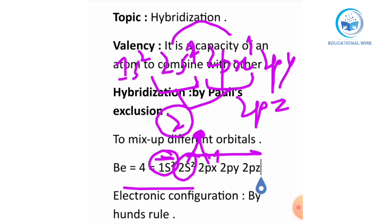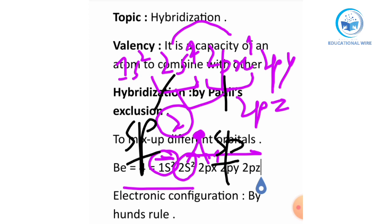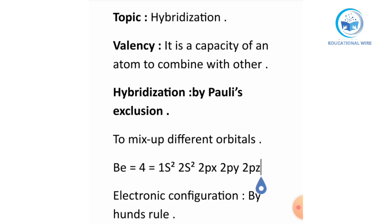So it says that 2s is one electron and 2px is one electron — both are unpaired. Therefore there are two valence electrons in beryllium. The names given are: 2s1 is called sp and 2px1 is also called sp. These two combine as sp hybridization. Their energies and shapes mix up, but the electrons themselves do not mix. According to Pauli's exclusion rule, beryllium has two valence electrons.